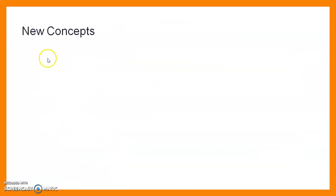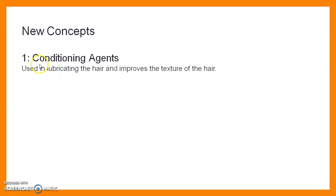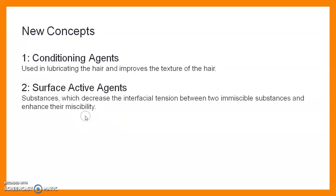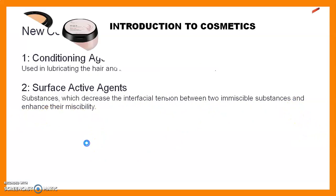Before starting this practical session, we need to know some new concepts. First, conditioning agents: these are used for lubricating the hair and improving the texture of the hair. Then surface active agents: these are substances which decrease the interfacial tension between two immiscible substances and enhance their miscibility.